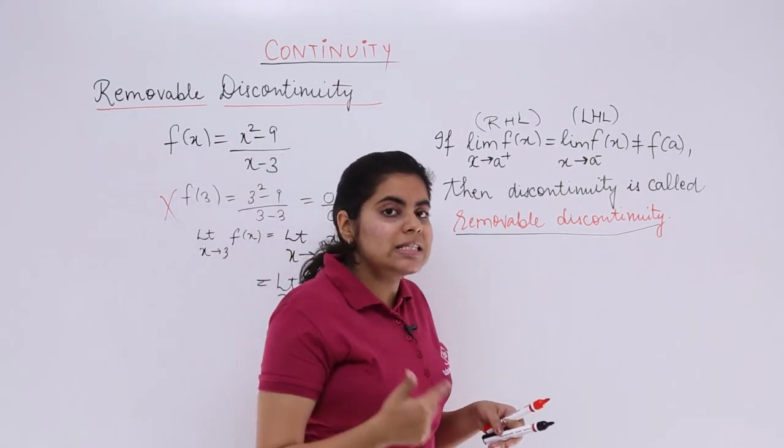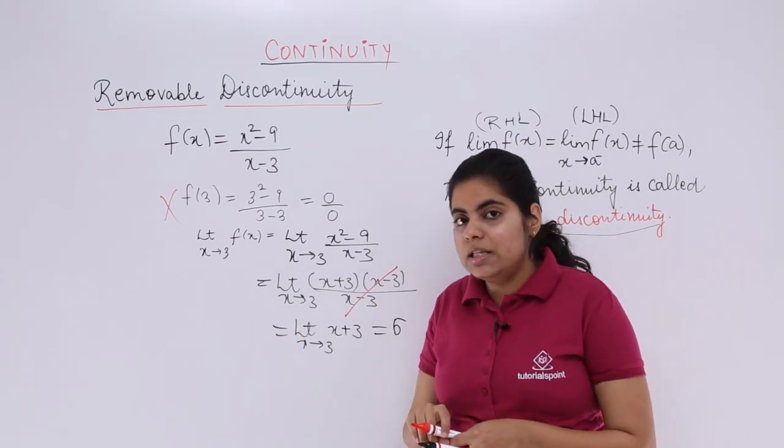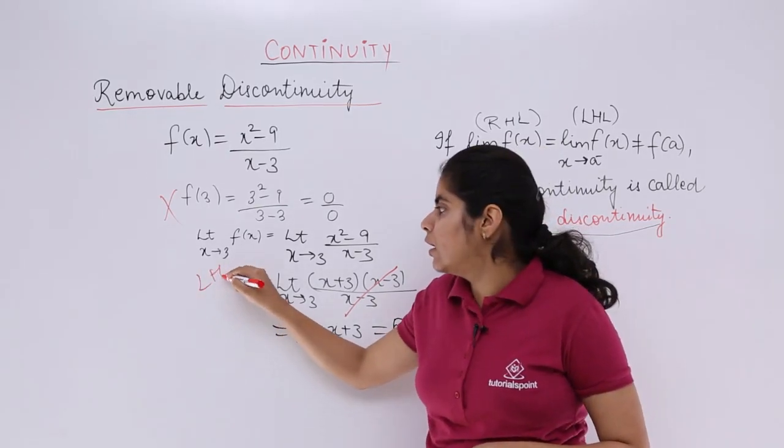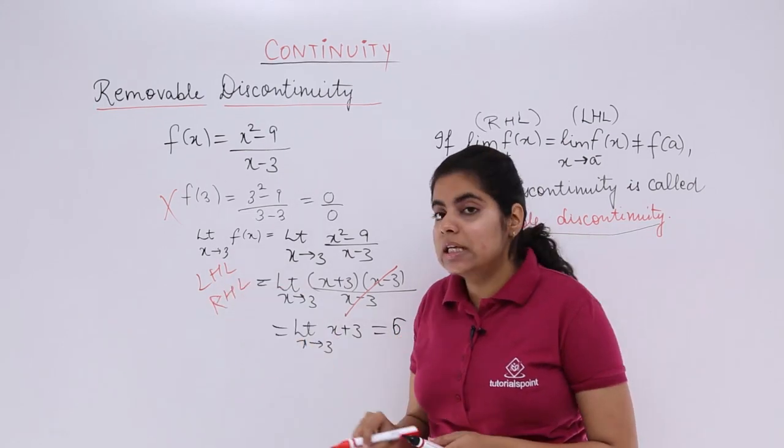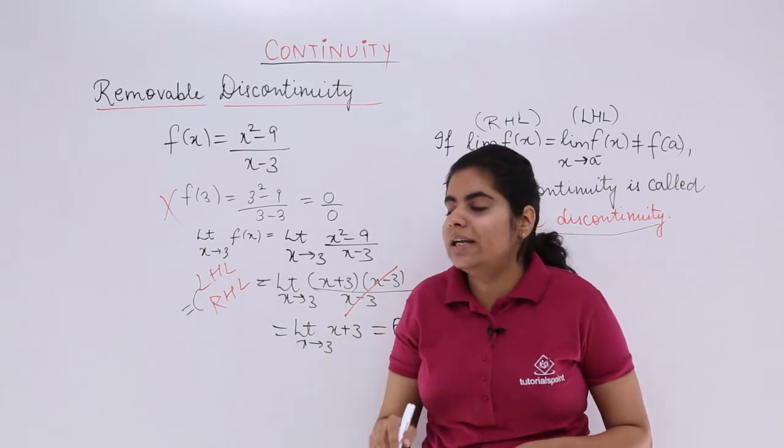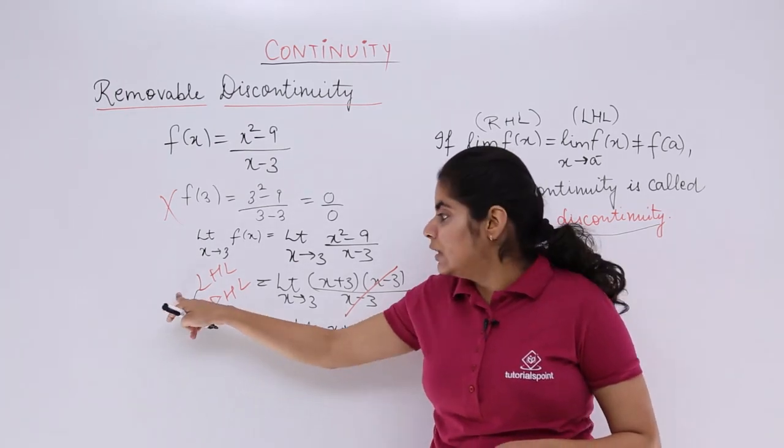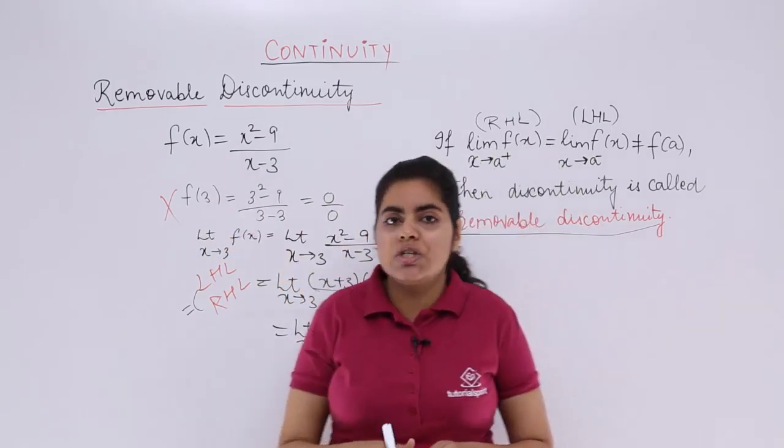Now, when 6 is coming, that is coming with the help of limits. That means both LHL and both RHL, they both exist and they both are equal. Only one thing is not existing and not equal. These both are equal, this is giving 0 by 0. The value of the function is not equal.